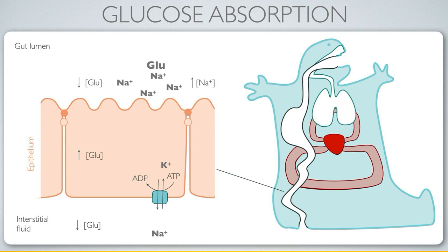The sodium concentration is low inside the cell compared to the spaces of the gut lumen and interstitial fluid outside the cell. Because of chemical diffusion, dissolved substances want to move down the concentration gradient, so a difference in concentration can serve as a source of energy.